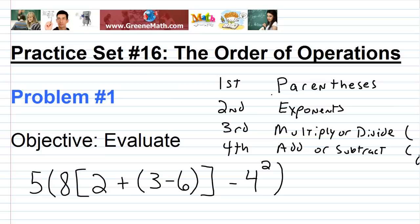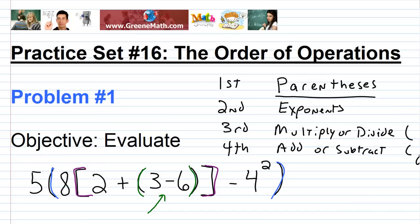Our highest priority is to work inside grouping symbols. This problem has multiple grouping symbols, and the rule is to always start at the innermost set and work outward. The innermost set is 3 minus 6. Once inside a set of grouping symbols, you reapply the order of operations, which leads you inward again.